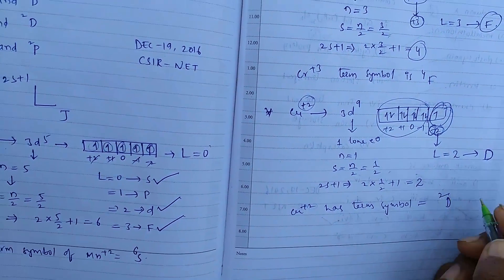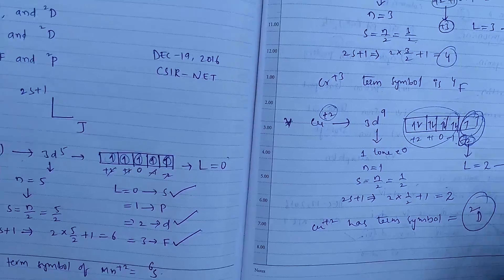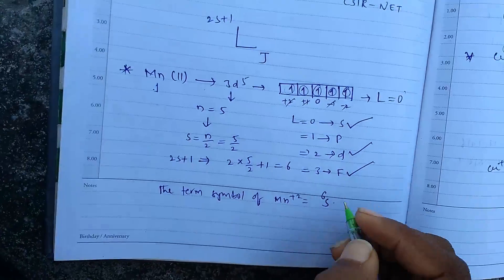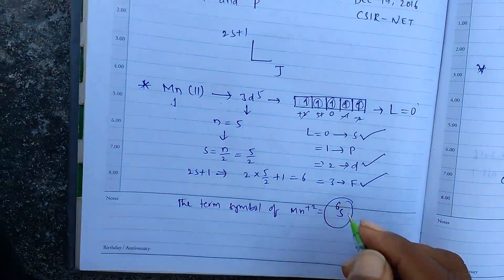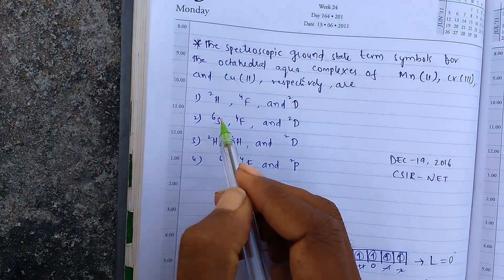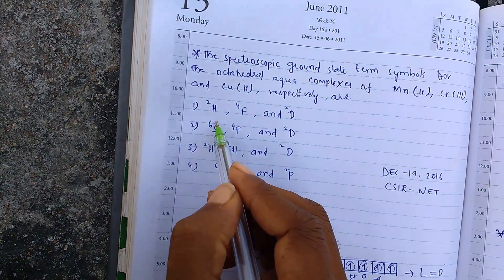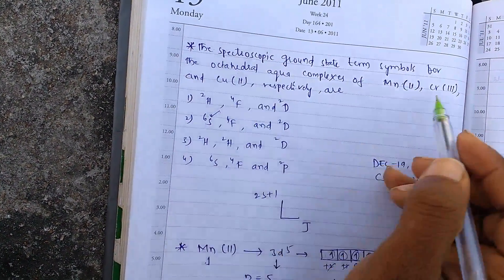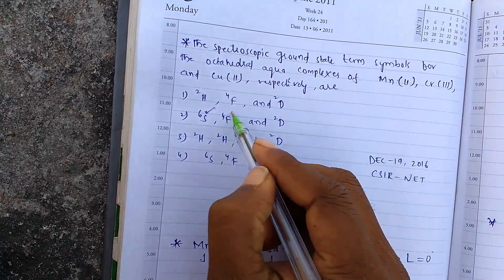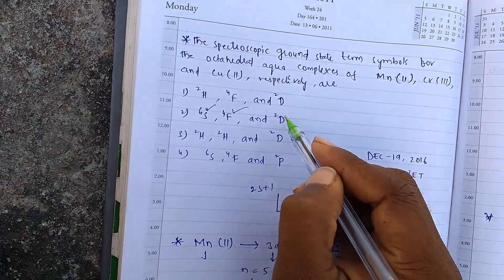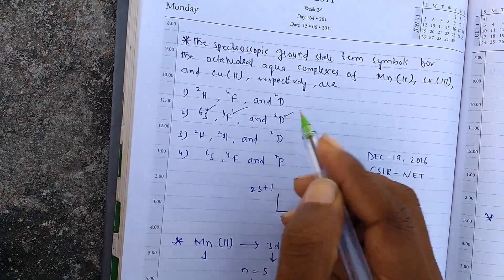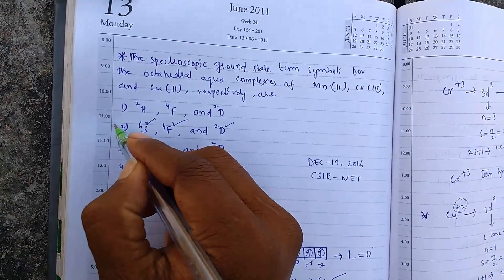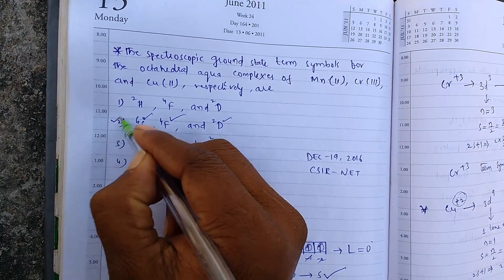So from this, the answer is: Mn²⁺ has ⁶S, Cr³⁺ has ⁴F, and Cu²⁺ has ²D. So the second option is the correct answer.